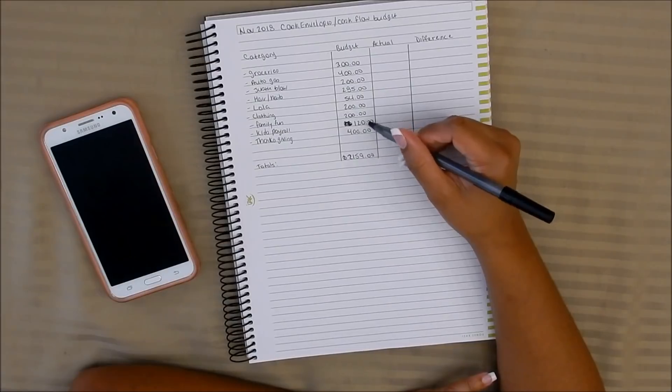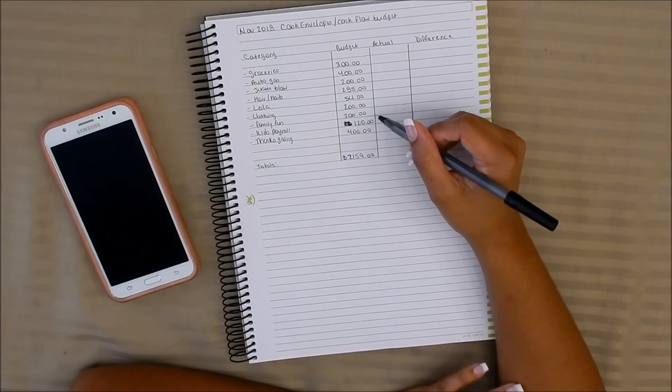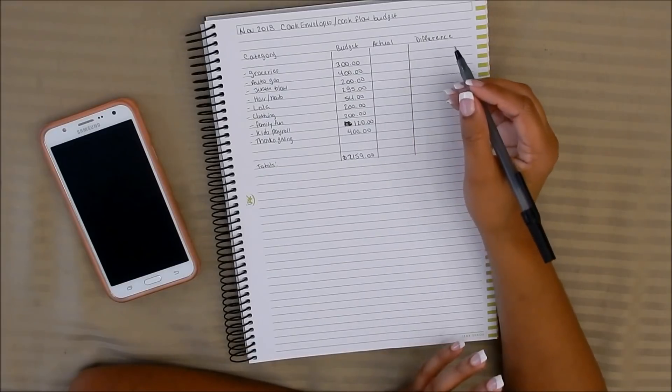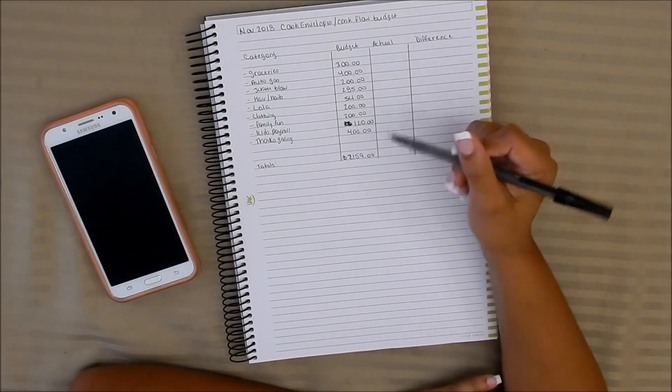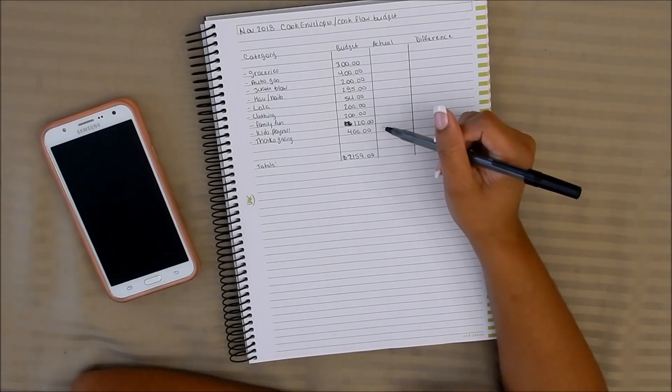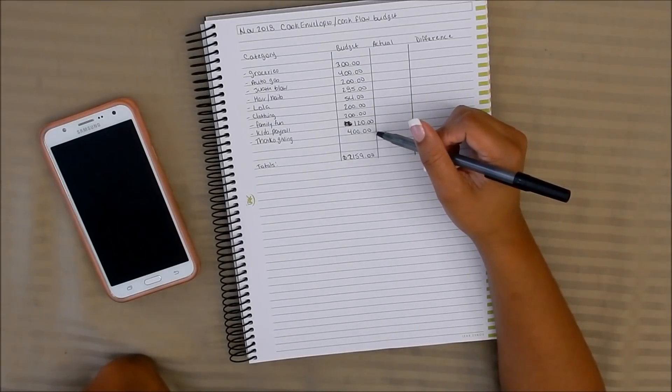Kids payroll is $120. This is enough to give each one of the kids their set commission if they actually complete their chores and all that. Then $400 for Thanksgiving. I highly doubt that we spend anywhere close to $400. I'm just budgeting that in because we don't even know for sure what we're going to do.